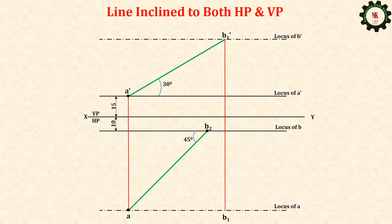Draw an arc with radius of A and B1 with A as center to cut the locus of B at point B. Join A and B which is the required top view and which is inclined at angle of beta with respect to VP.